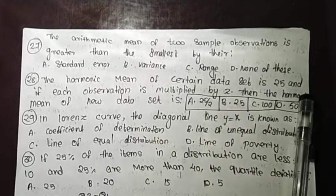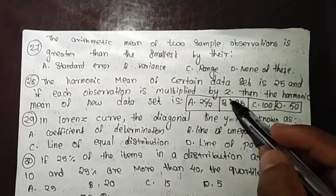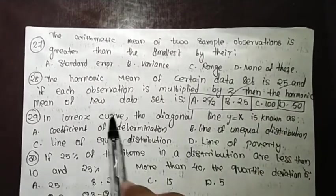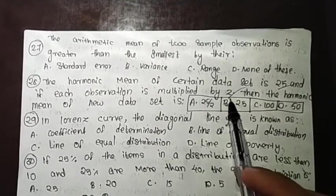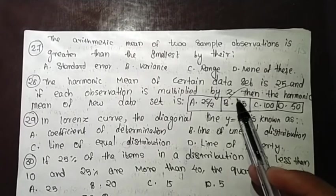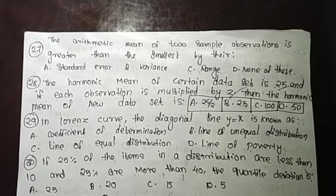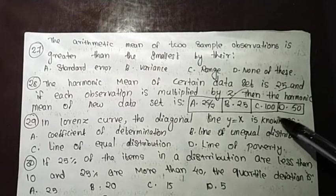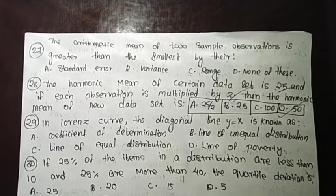Question 28: the harmonic mean of a certain data set is 25, and each observation is multiplied by 2. The harmonic mean of the new data set is 25 into 2, which equals 50.